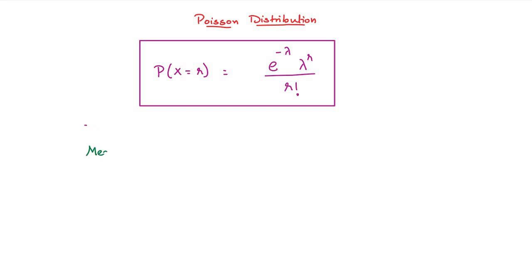Where mean E(x) is equal to lambda and the variance V(x) is equal to lambda. Here both mean and variance are equal to lambda.